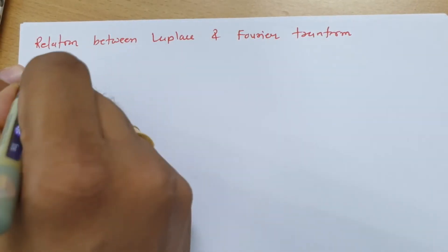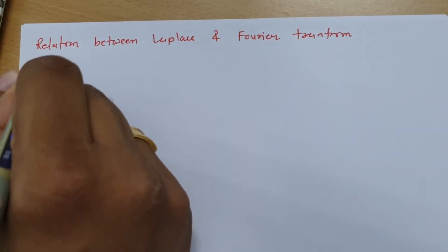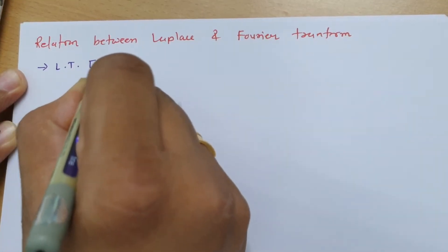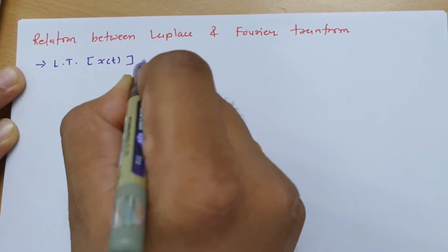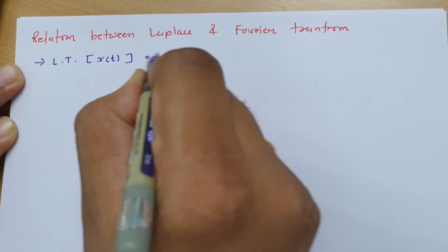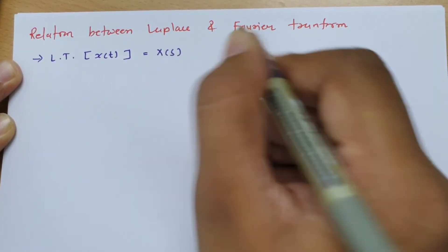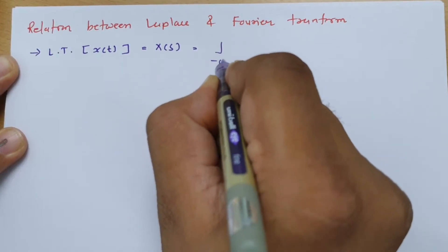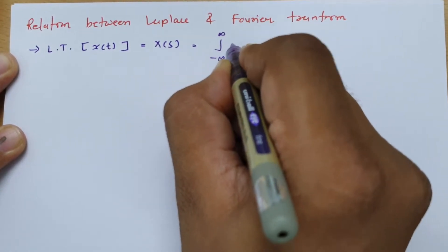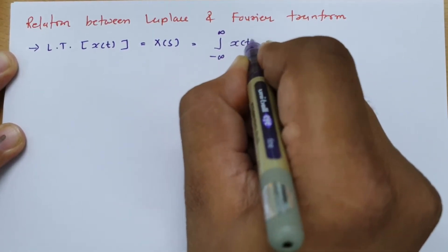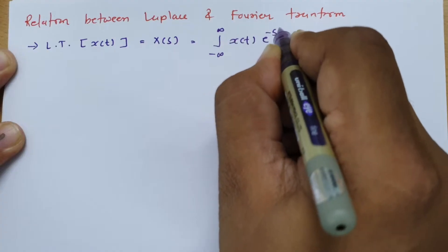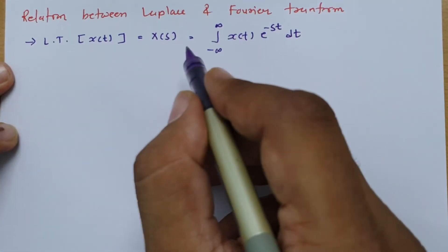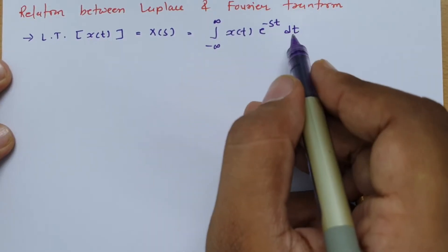First of all we should know what the Laplace transform is. The Laplace transform of a signal x(t) is X(s), and we can calculate it by the integral from minus infinity to infinity of x(t) times e to the power minus st, dt. This is how we obtain the Laplace transform.